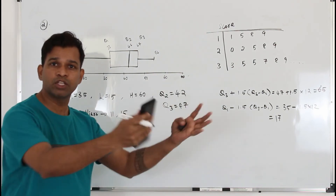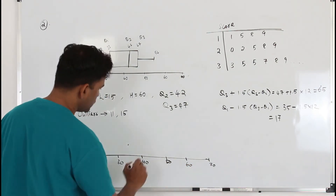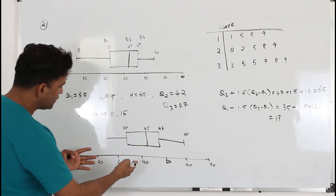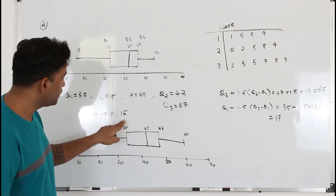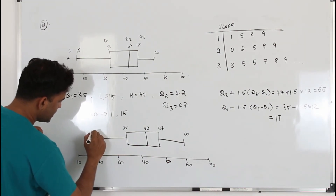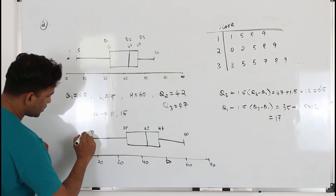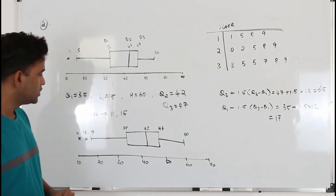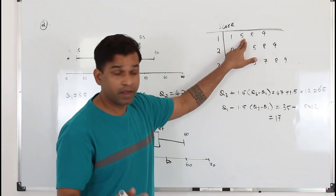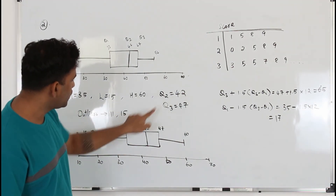We now have all the information to draw the updated box and whisker plot. Since 15 is now an outlier, the lowest whisker value is 18 (the next lowest score). The two outliers, 11 and 15, are plotted as separate points. The updated plot has: lowest value 18, Q1 = 35, Q2 = 42, Q3 = 47, highest value 60, with outliers at 11 and 15.